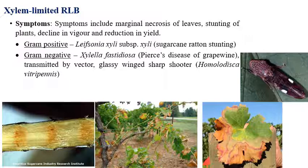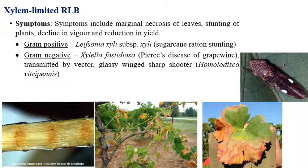In the gram-positive category, the example is Leifsonia xyli subspecies xyli, which causes sugarcane ratoon stunting. Sugarcane ratoon stunting is a xylem-limited gram-positive bacterial disease, as shown in the diagram here.